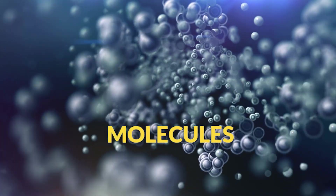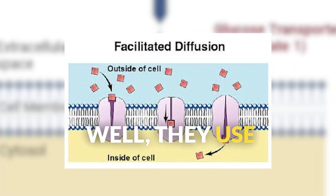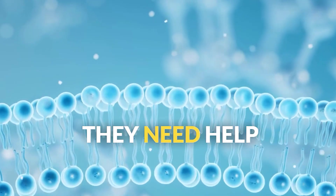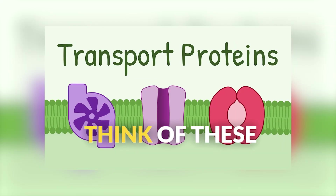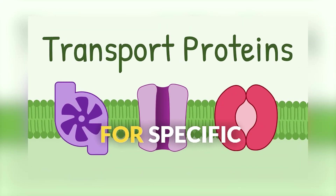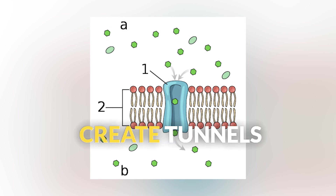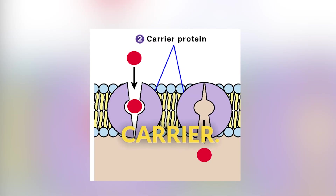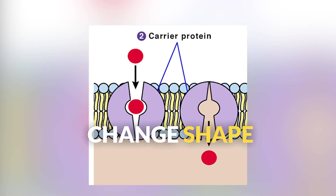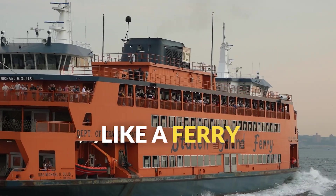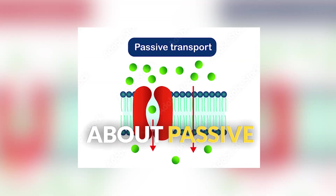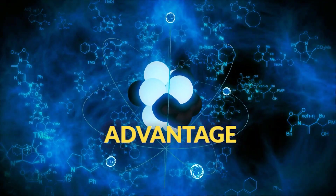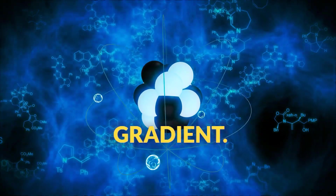But larger molecules like glucose use facilitated diffusion. They still move down their concentration gradient, but they need help from transport proteins. Think of these proteins as doors that only open for specific molecules. Channel proteins create tunnels through the membrane — like a dedicated lane on our cellular highway. Carrier proteins actually change shape to shuttle molecules across, more like a ferry service. The key thing about passive transport is that it's free — no energy required. Cells just take advantage of natural molecular movement and concentration gradients.